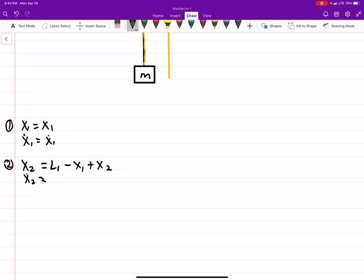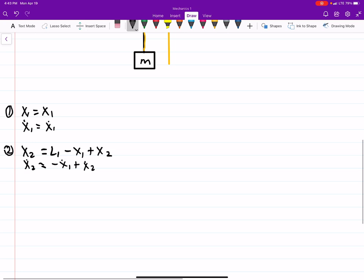L is just a constant, that's the length. So we'll get minus x1 dot plus x2 dot. L is just the length of the rope, and that's not changing. That's a constant. So its derivative is zero. And then for, so this, just so we know, is for 4m. This one is for 3m. And then one just for m. We'll call x3.